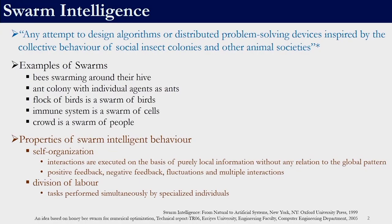The two important properties of swarm intelligent behavior are self-organization and division of labor. By self-organization we mean that the interactions are executed on the basis of purely local information without any relation to the global pattern. Self-organization consists of positive feedback, negative feedback, fluctuations, and multiple interactions. By division of labor we mean that tasks to be performed are performed simultaneously by specialized individuals. This is what constitutes swarm intelligence.